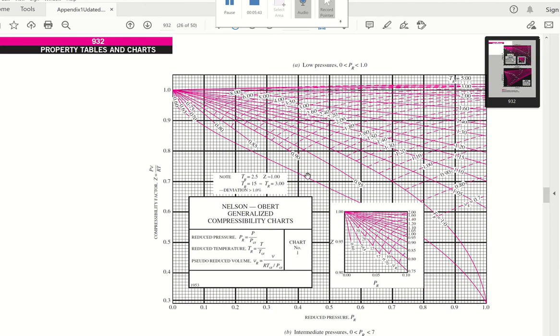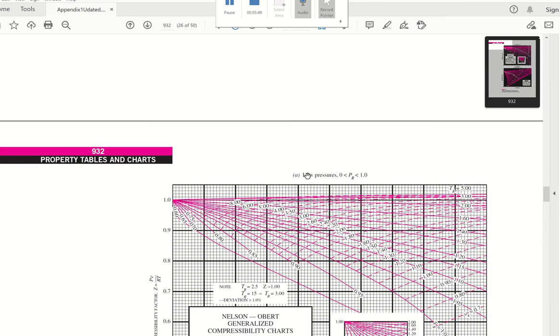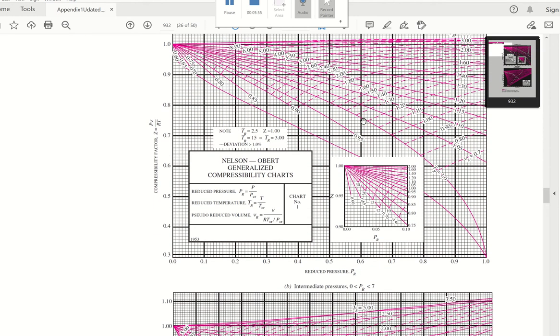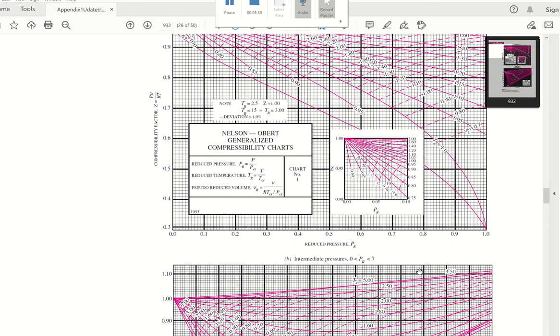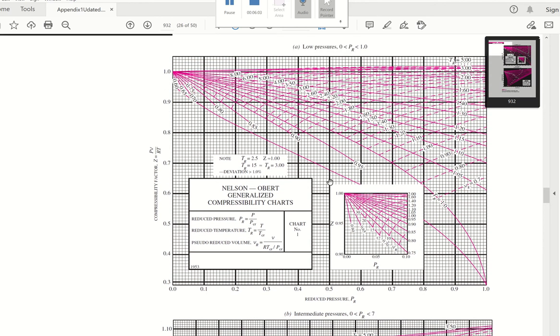All right, so there are two charts here at table A-15. For reduced pressure as between 0 and 1. The second one has a higher range from 0 to 7. So for this problem, our PR is 0.6. So the top one is better. And then you can see there's an inlet. For that inlet, it is for this very dense area. It's hard to find. Then they have this value here from 0 to 0.1. So basically it's this range right here. Then they zoomed in. We don't need to use this inlet because our PR is 0.6.